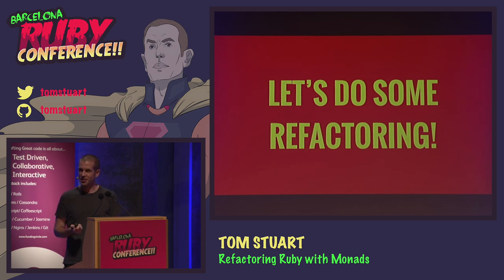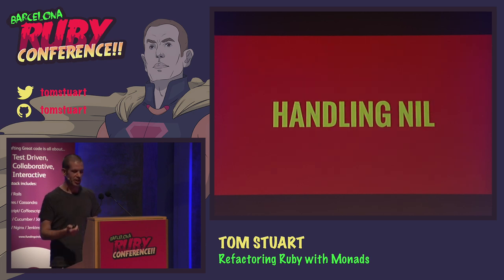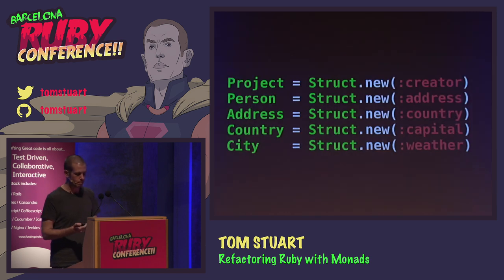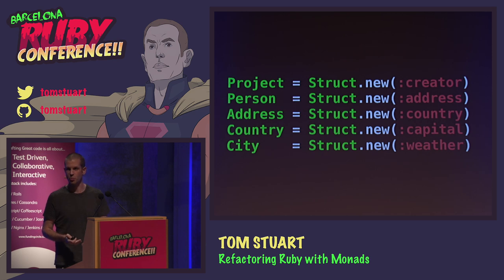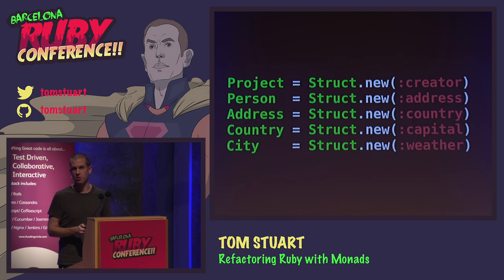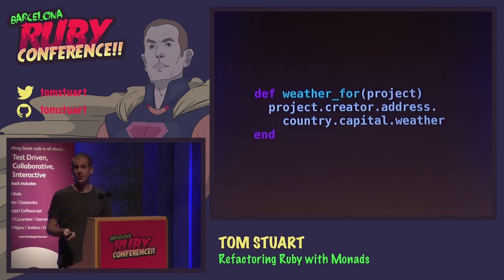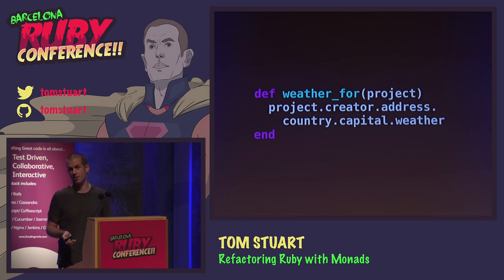Let's do some refactoring. First I'd like to look at some code that has to deal with nils. Imagine we have a project management app: each project has a person who created it, each person has an address, each address has a country, each country has a capital city, and each city has weather information — let's assume it's a string. In our UI we want to display the weather next to each project, which involves traversing all of those associations. Here's a method that does that — maybe something you'd write in a Rails view helper. People will always write code like this no matter what we say.